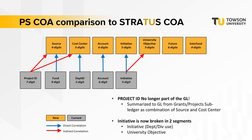The new Stratus Chart of Accounts is represented in the orange boxes. You'll notice a direct correlation of the four-digit PeopleSoft fund to the four-digit Stratus source, the five-digit PeopleSoft department ID to the five-digit Stratus cost center, the six-digit PeopleSoft account to the six-digit Stratus account, and the five-digit PeopleSoft initiatives to the five-digit Stratus initiatives.